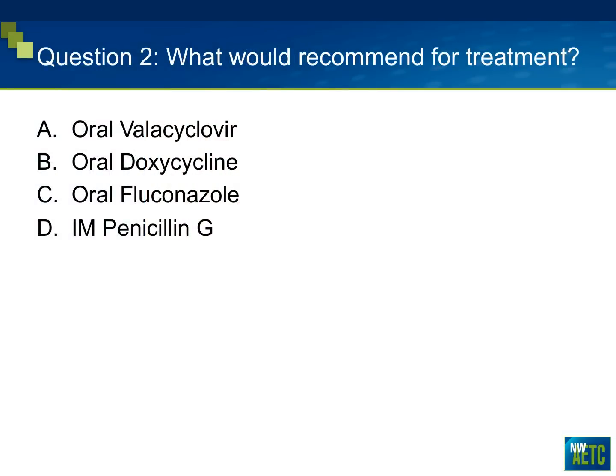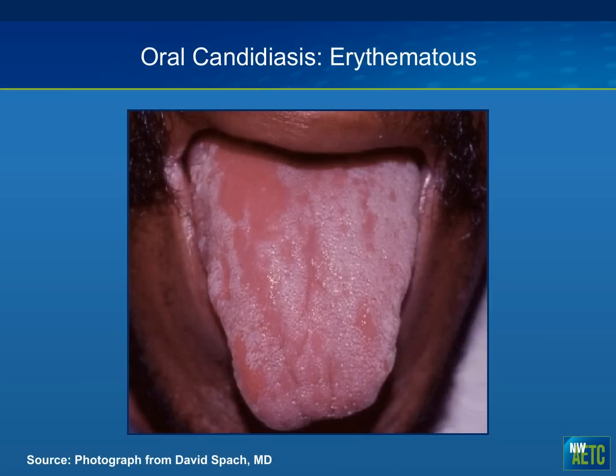With that in mind, what would you actually recommend for treating this individual? Would it be A, oral valacyclovir; B, oral doxycycline; C, oral fluconazole; or D, intramuscular penicillin G? Most people are choosing oral fluconazole. What this is, is erythematous candidiasis.